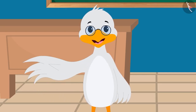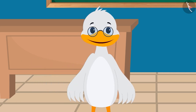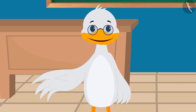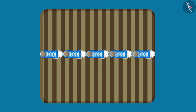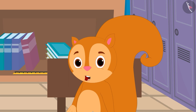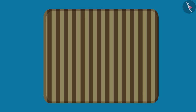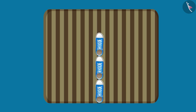Children, let's see what is the length and width of this mat. 1, 2, 3, 4 and 5. The length of this mat is 5 feet. And what is the width of this mat? 1, 2, 3 and 4 — that means 4 feet.